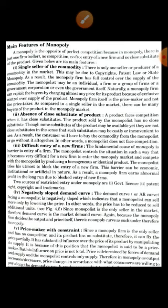The first feature is single seller of the commodity — there is only one seller. For example, if we look at the RBI, it has no substitute. The second feature is difficult entry of a new firm; it is very difficult for other firms to enter a monopoly market.